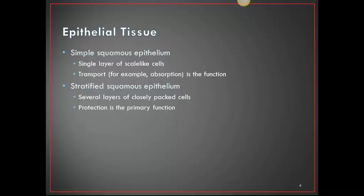Simple squamous epithelium is a single layer of sac-like cells whose function includes transport and absorption. A good example is the alveoli in the lungs. Stratified squamous epithelium consists of several layers of closely packed cells whose main function is protection. Examples include skin and mucous membranes.